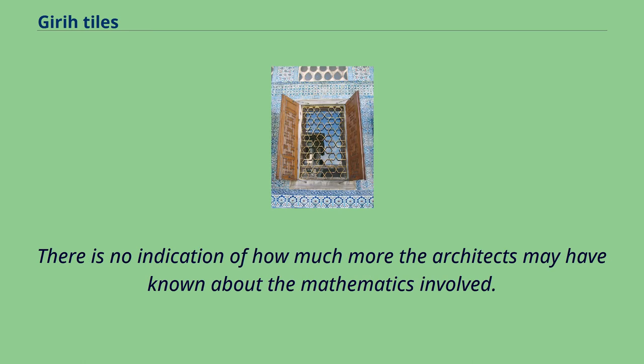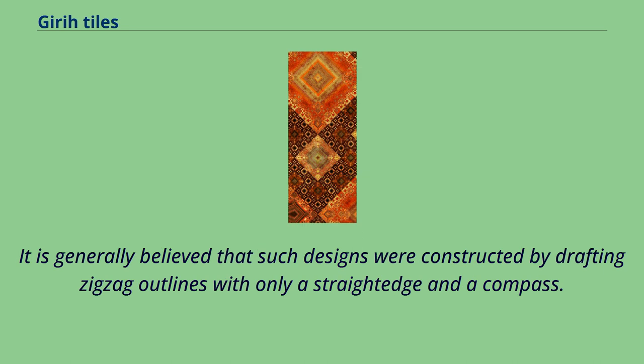There is no indication of how much more the architects may have known about the mathematics involved. It is generally believed that such designs were constructed by drafting zigzag outlines with only a straightedge and compass.